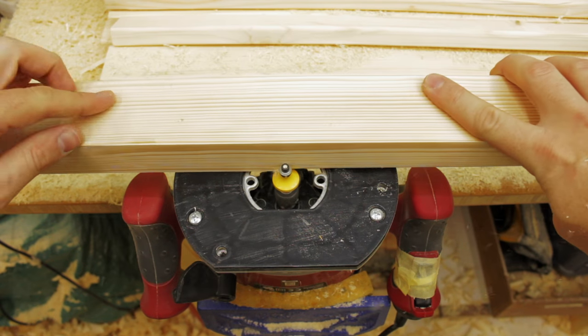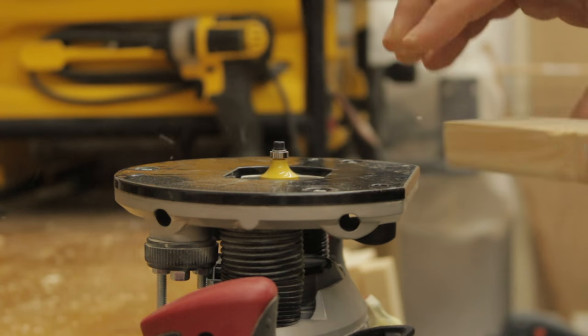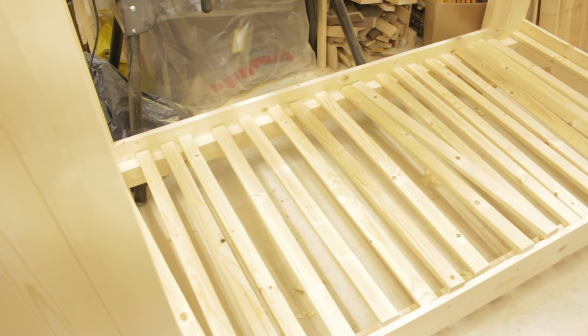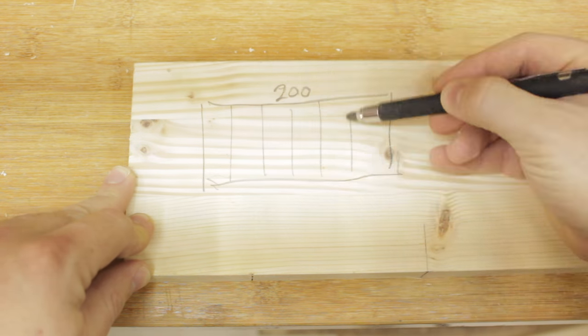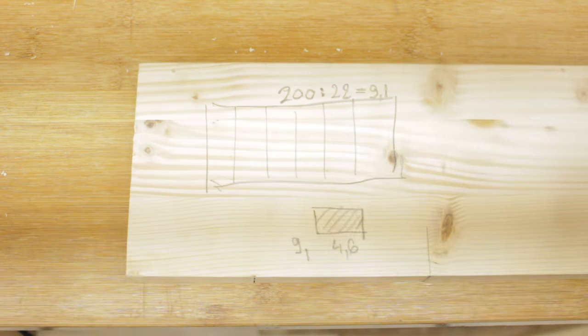When that was done, we rounded out the slats on the router bit, which was 3/8 of an inch. When I did all of that, I made the calculations to make the separators between the slats.